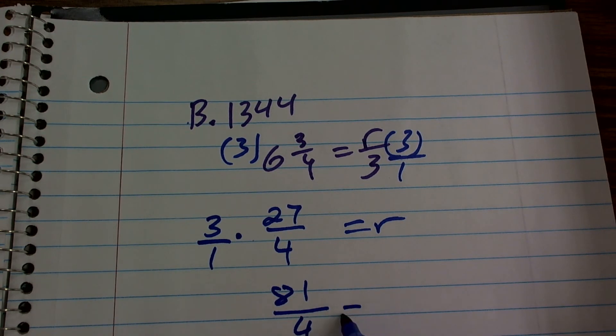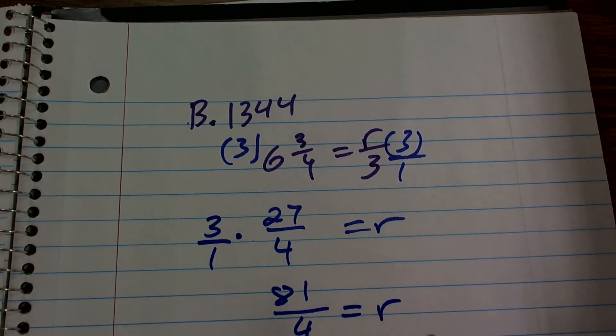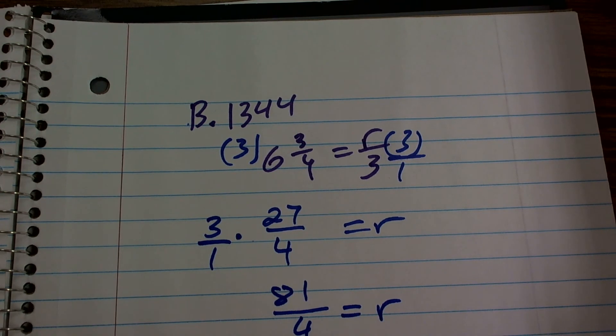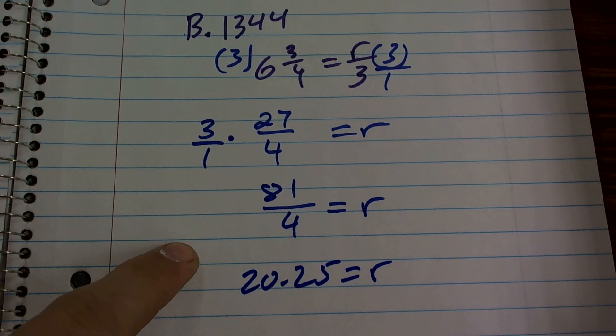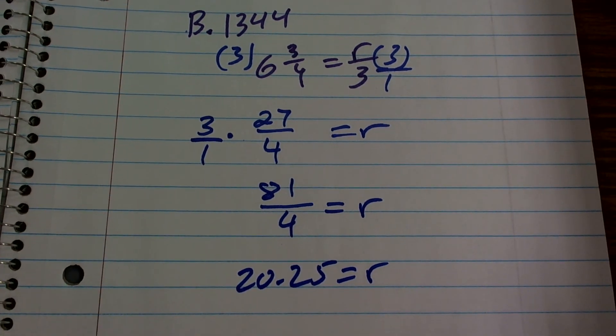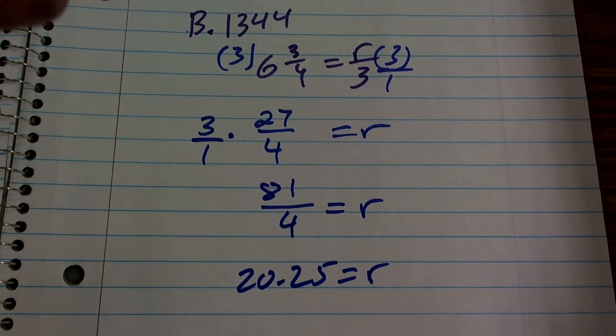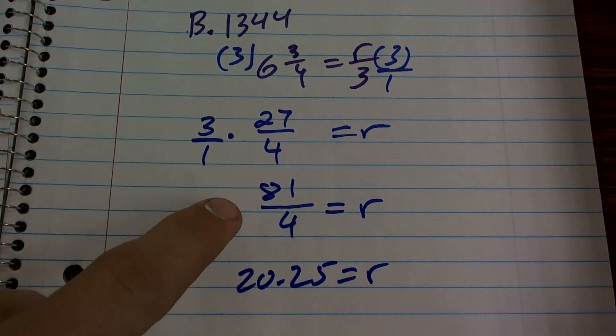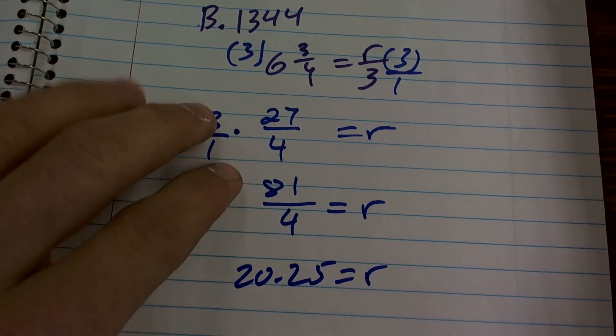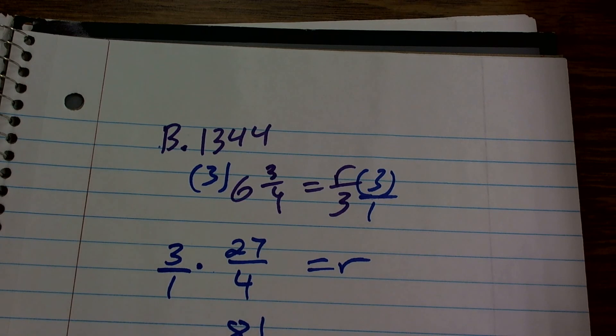which equals r. Now we could simplify this to 20.25, depends on your teacher or what the question is asking, equals r as well. But the main important thing that we understand is 81 divided by 4 is the solution, or 20.25 is the solution that makes this equation true.